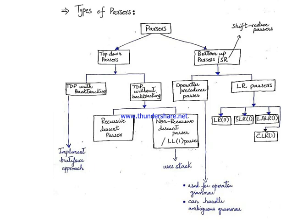LR parsers are divided into four categories: LR(0) parser, SLR(1) parser, LALR(1) parser, and CLR(1) parser. Basically, the algorithms across all four are the same, but the parsing tables are different. Specifically, the canonical collections of LR items are different, which is what makes their parsing tables differ.